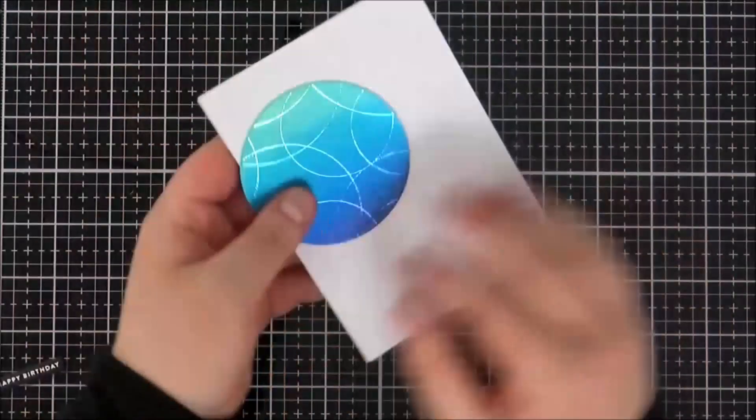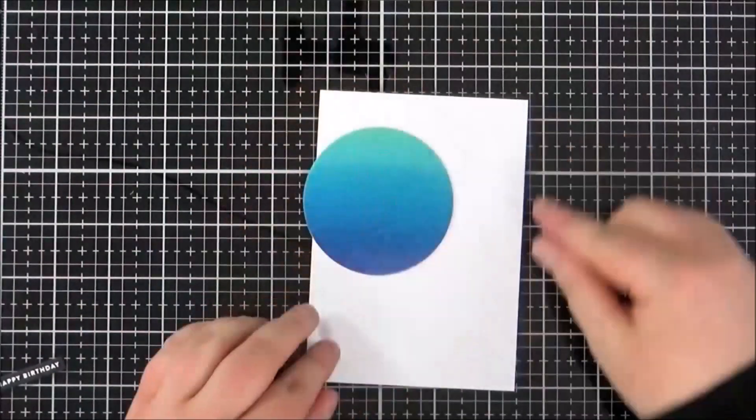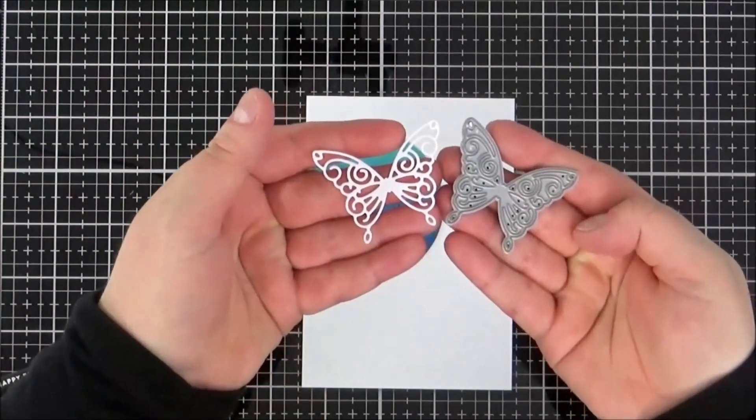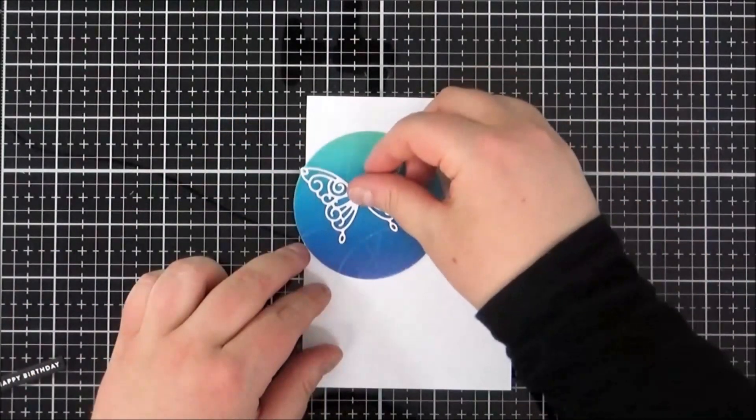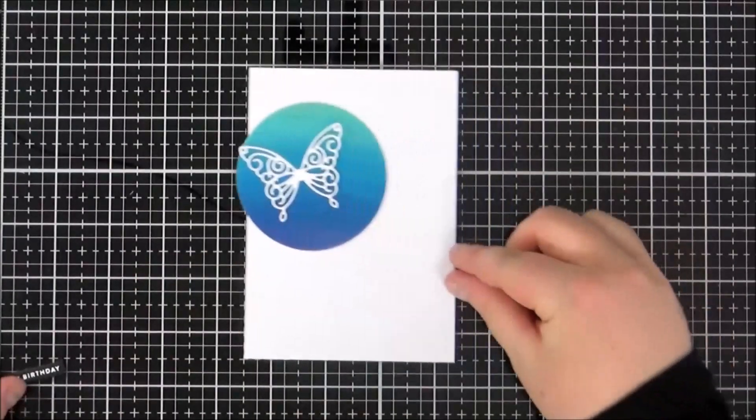That is three and six-eighths wide by five and a half tall. Unfortunately it's very difficult to see that embossing, but I've made sure that piece I added on top lines up perfectly with all the lines.